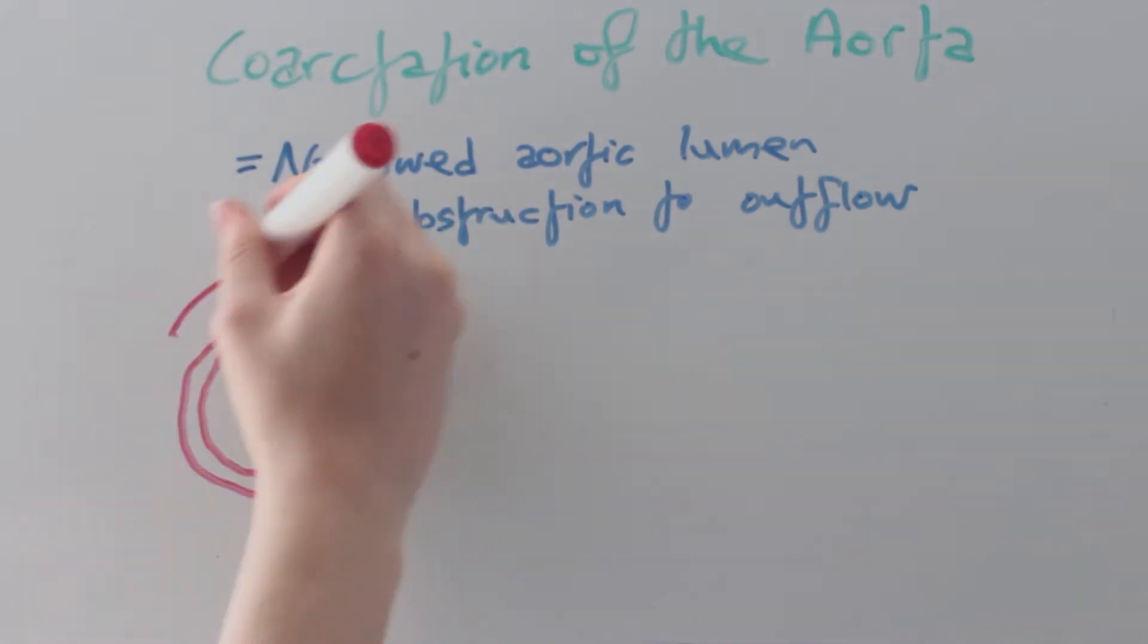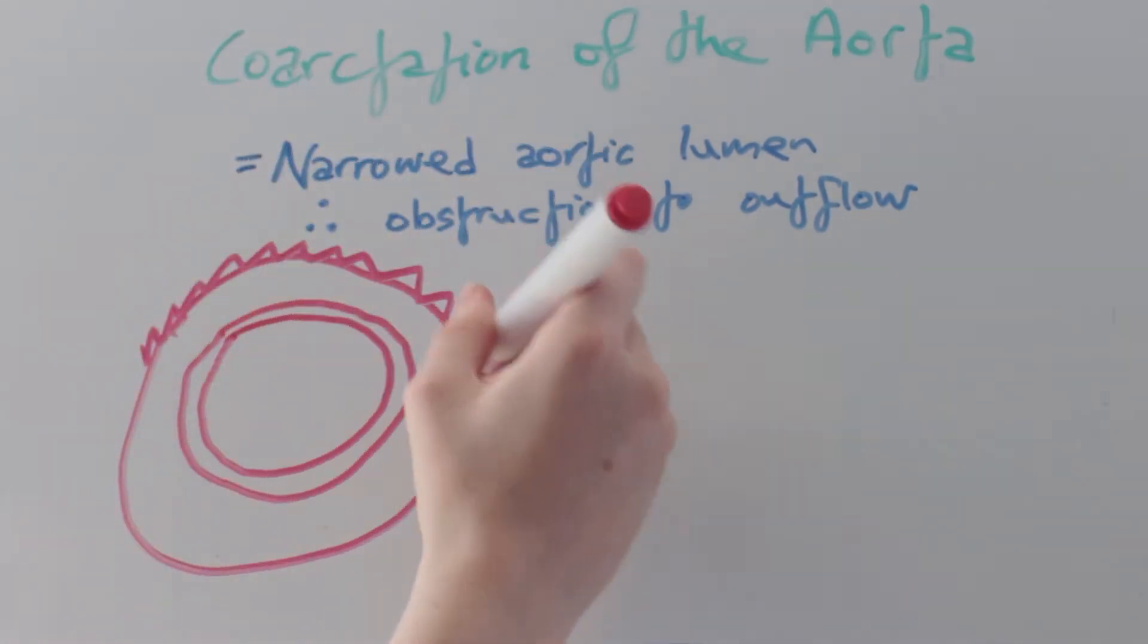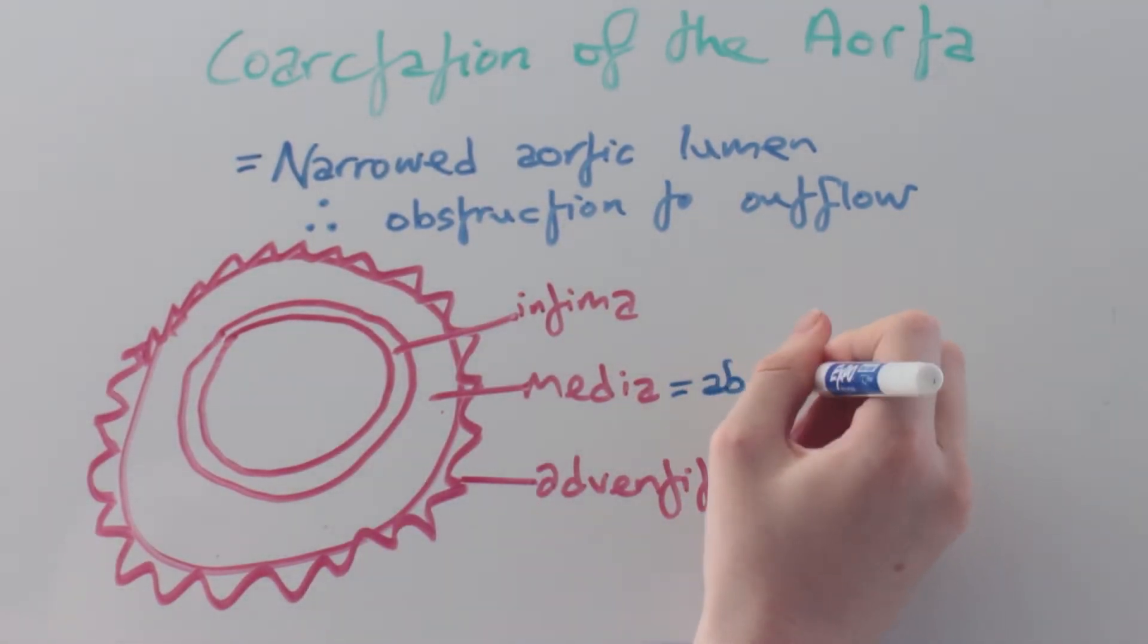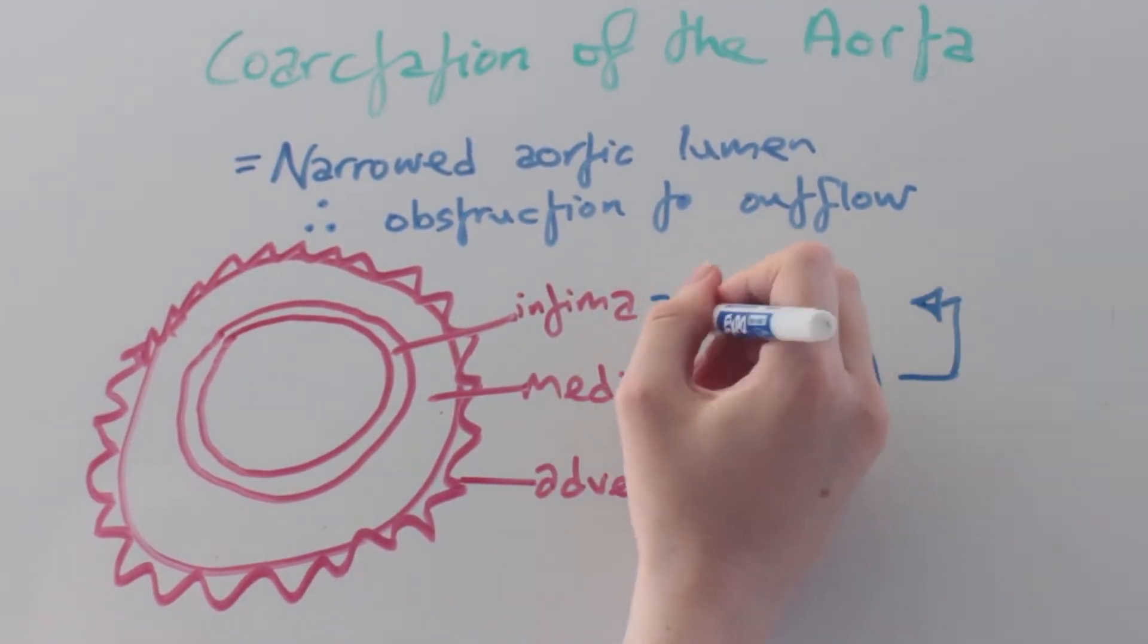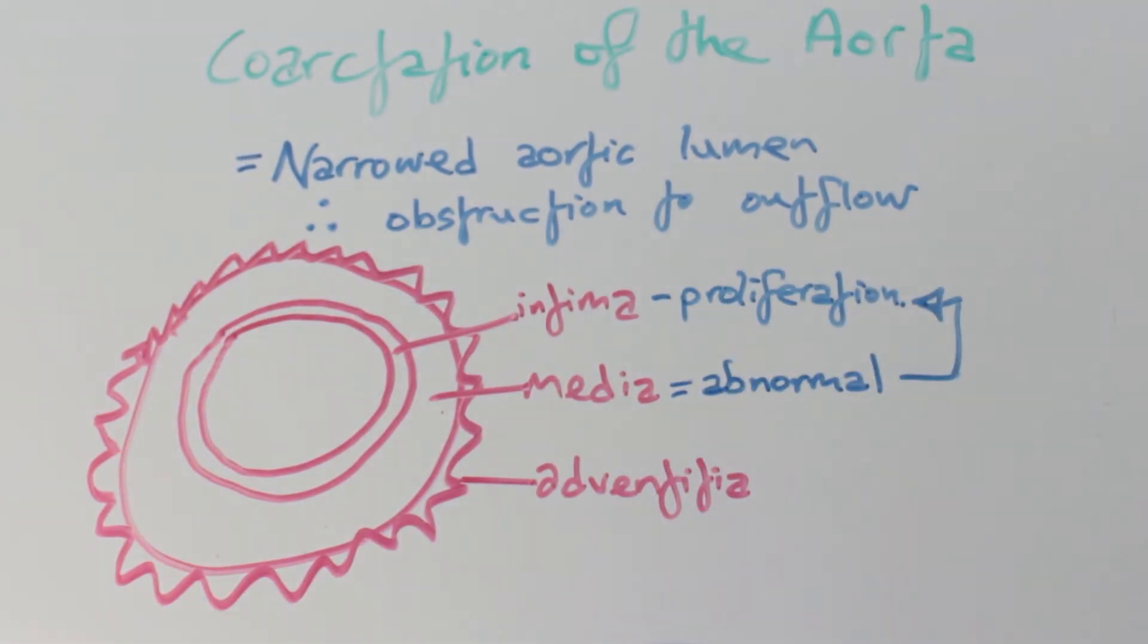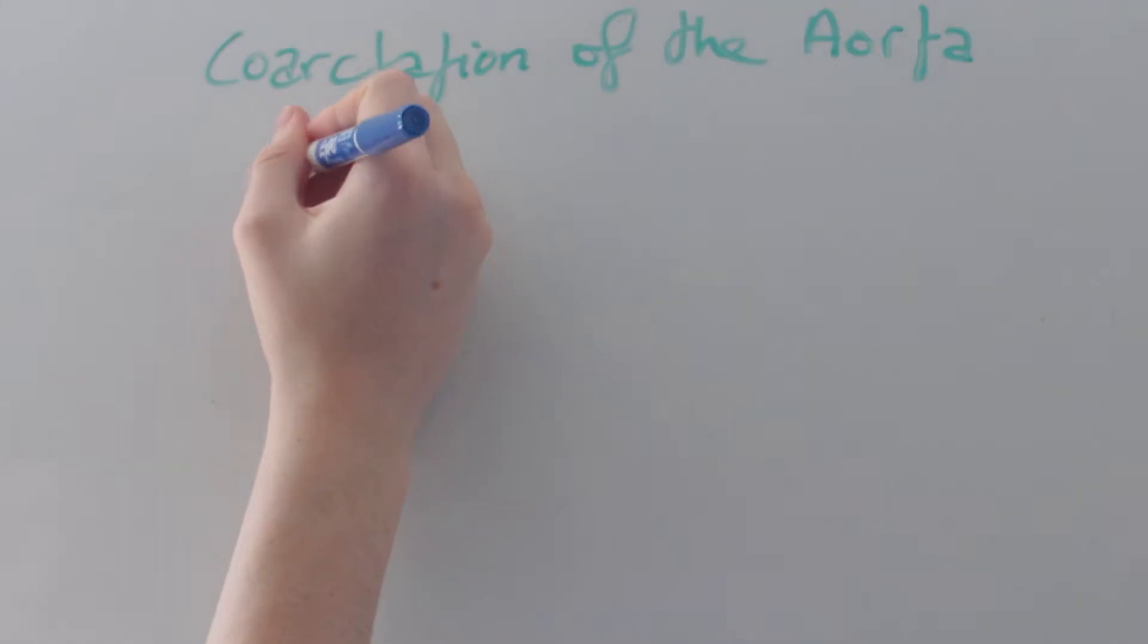The aorta has three layers: the intima, media, and adventitia. In this disease there is an abnormal media which leads to proliferation of the inside layer resulting in constriction, which we call coarctation.